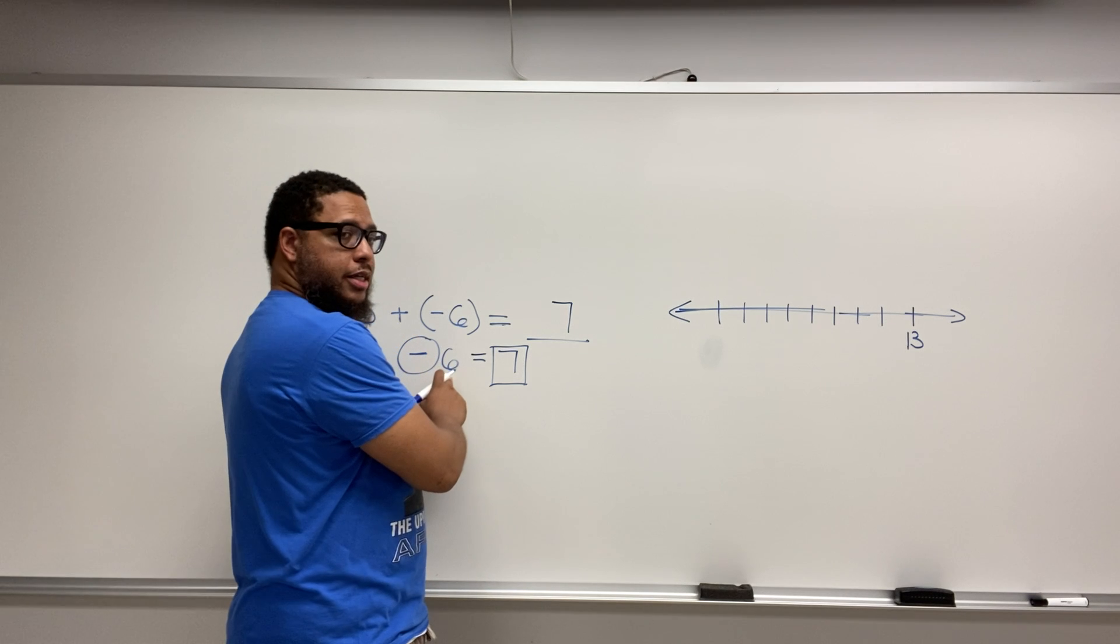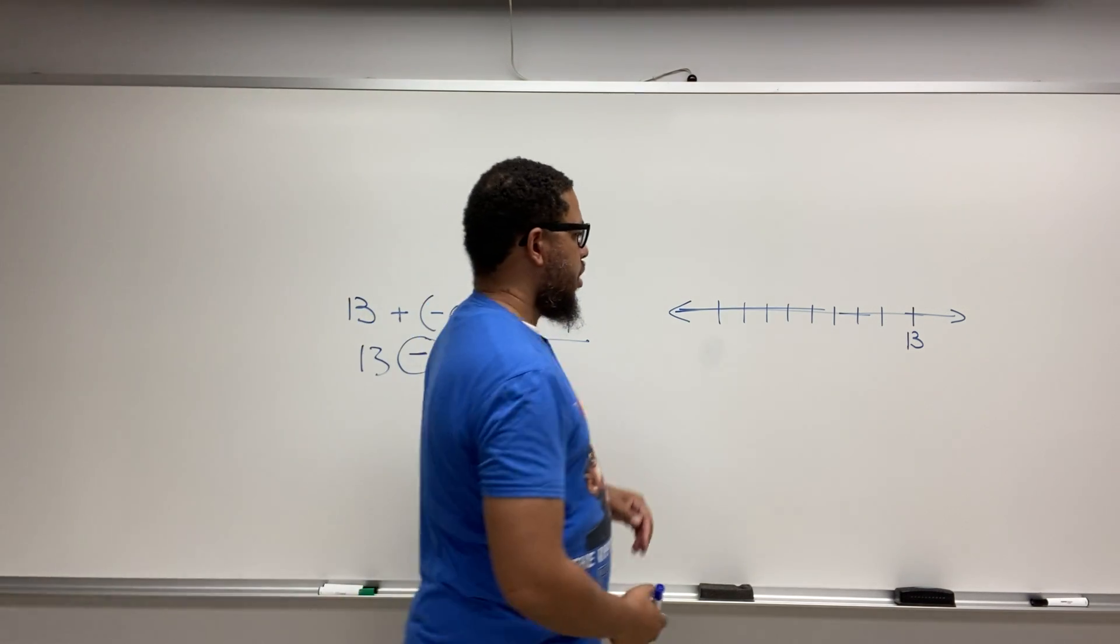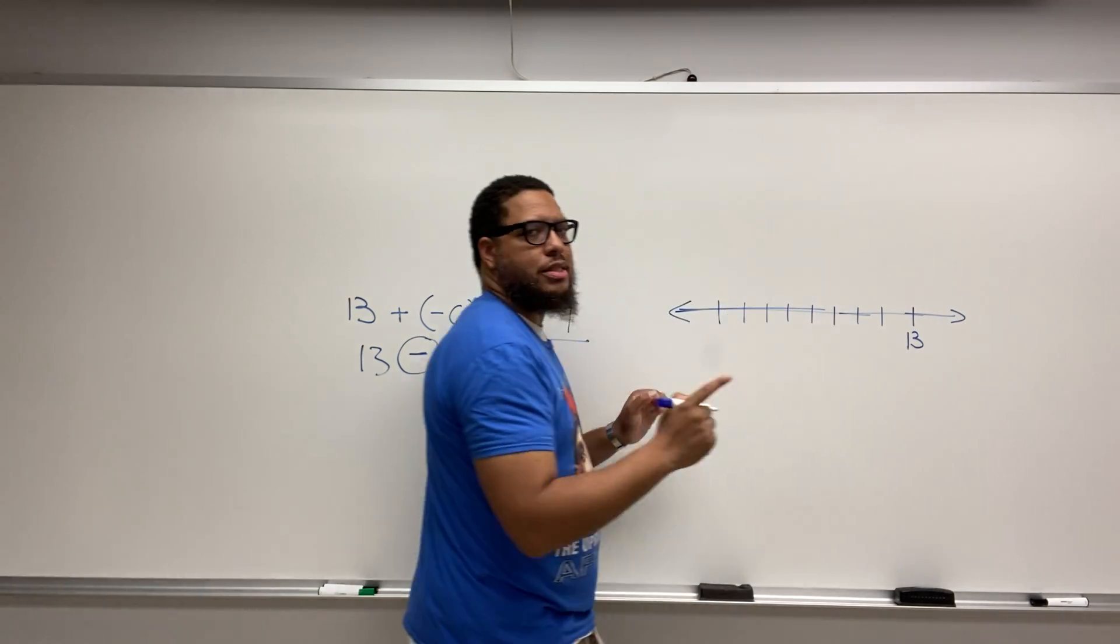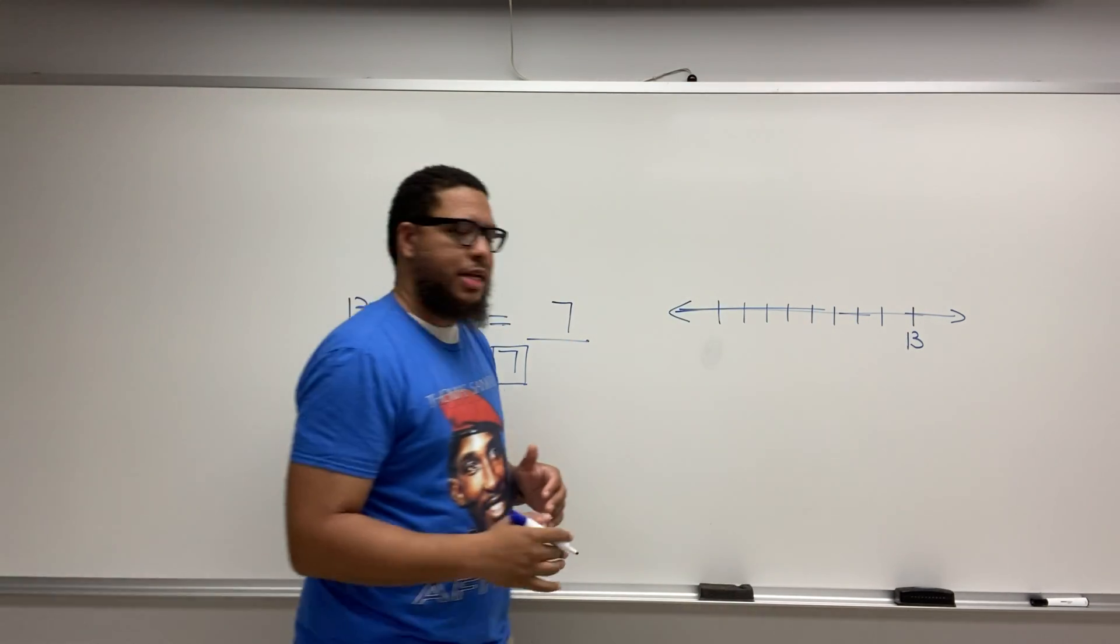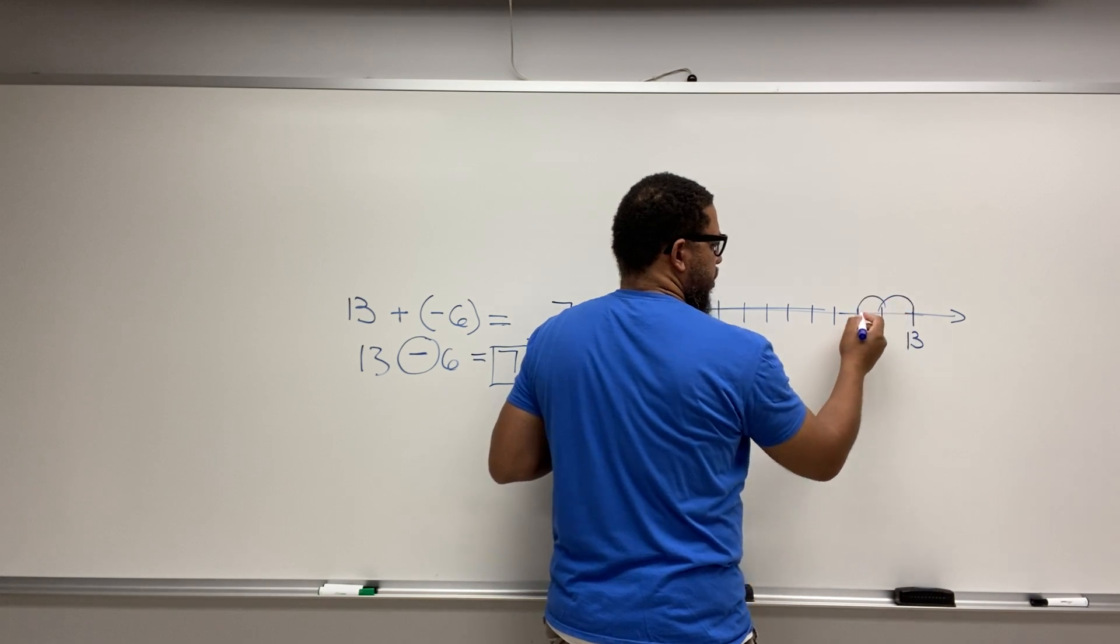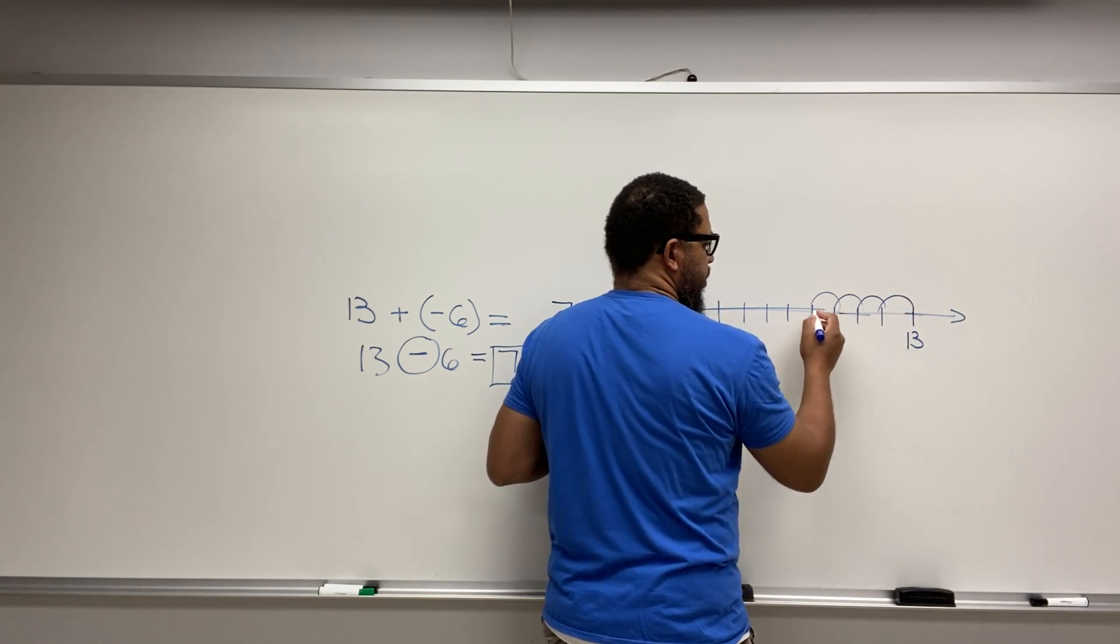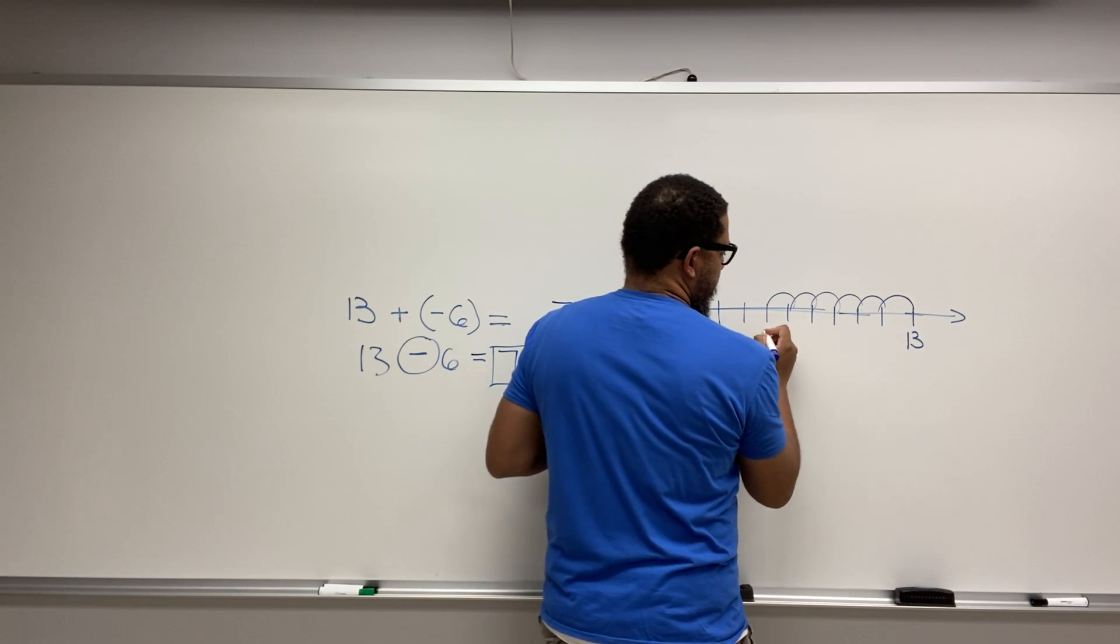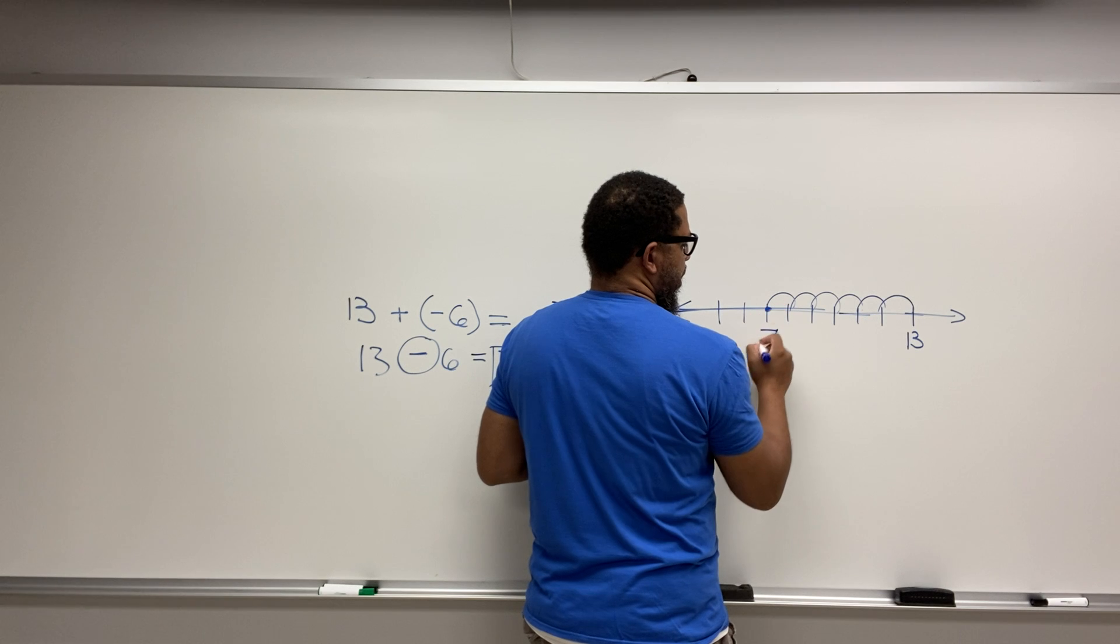And then this number right here, 6, tells me how far I'm going to go. So basically, I'm doing this. I started at 13 and I'm counting spaces, not lines. I'm counting spaces. So I'm going to go 1 space, 2 spaces, 3 spaces, 4 spaces, 5 spaces, 6 spaces. So that's going to be 7, where I stopped at.